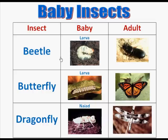Here we have a beetle. You can see here is an adult beetle, and their baby is called larva.